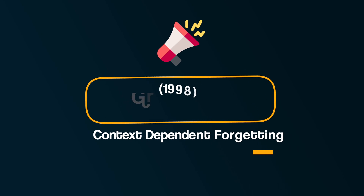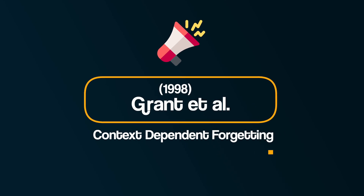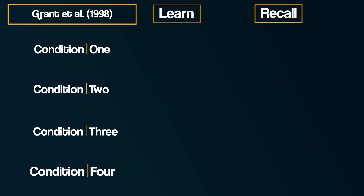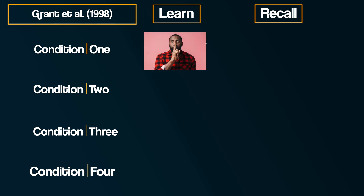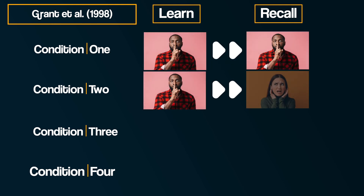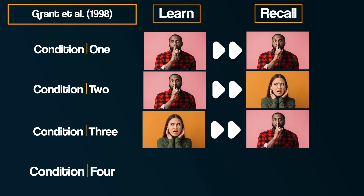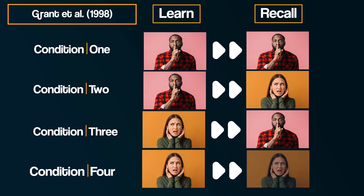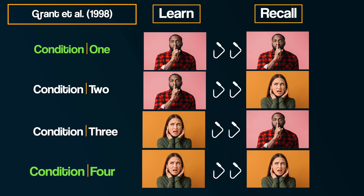A second study demonstrating context-dependent forgetting was research by Grant et al. in 1998. Participants read an article in either silent or noisy conditions. There were four conditions again: learn in silence and recall in silence; learn in silence and recall in a noisy environment; learn in a noisy environment and recall in silence; and learn in a noisy environment and recall in a noisy environment. They found the ability to retrieve information was better when the conditions matched, showing how we can forget if the contextual cues — in this case silence or noise — are absent at recall.